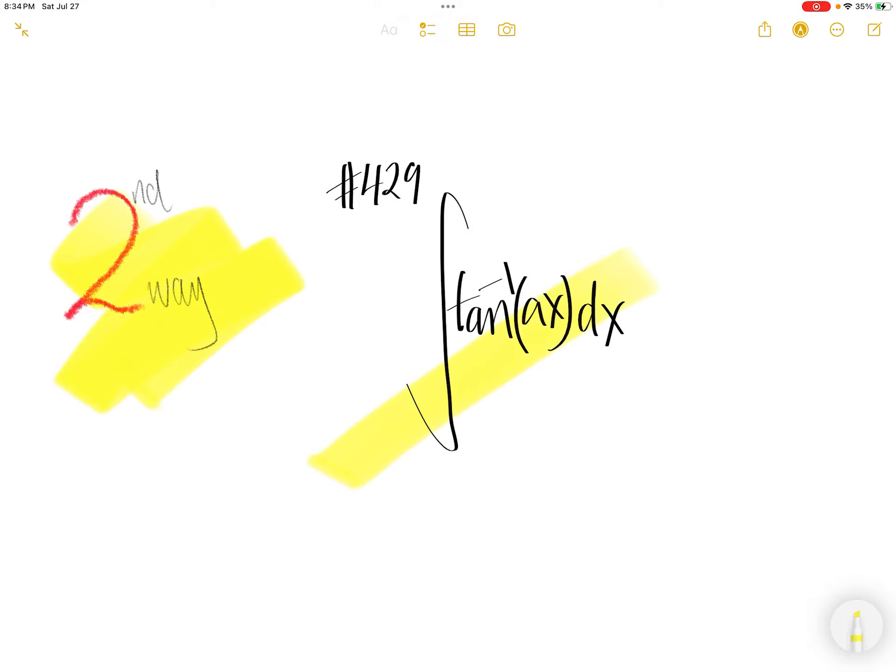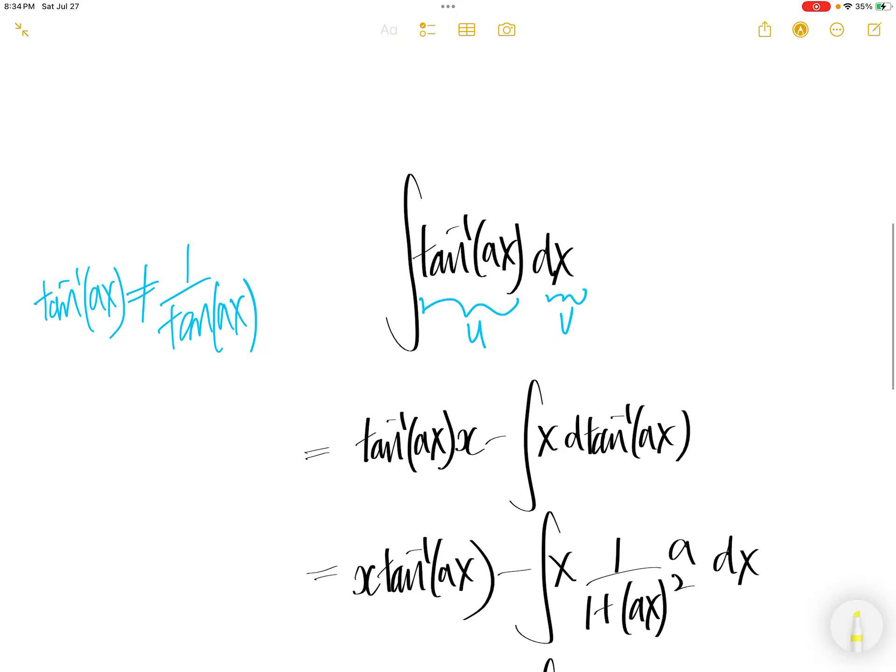Second way to get this integral: integral of arctan Ax with respect to x. Just take a note that this arctan Ax is not 1 over tangent Ax. 1 over tangent Ax is cot Ax. This is inverse tangent Ax. It's the angle.